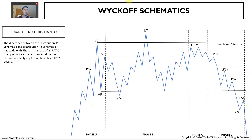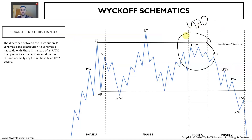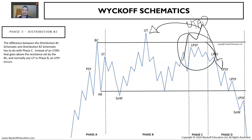You can also have a distribution schematic two, where rather than an upthrust after distribution, you have a last point of supply that doesn't go above the upthrust as in schematic one. Just slightly different, but it comes into context - looking at the supply and demand balance, the effort versus result, and knowing the Wyckoff price cycle and where you are within it.